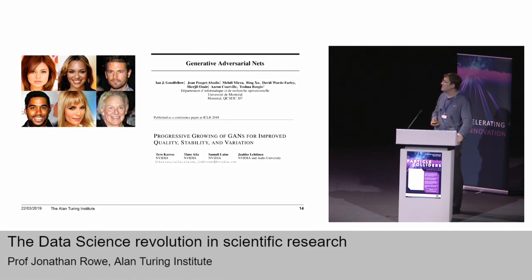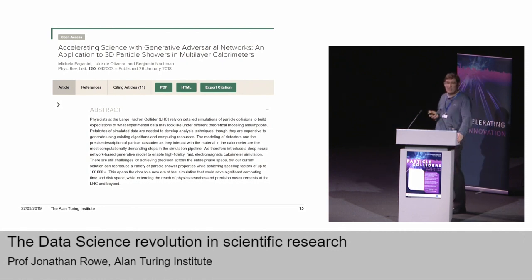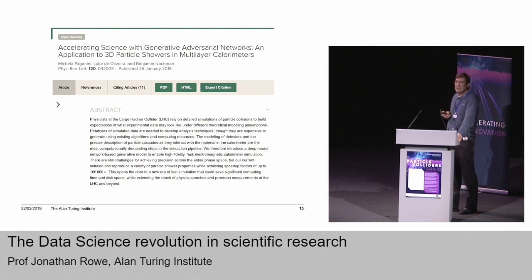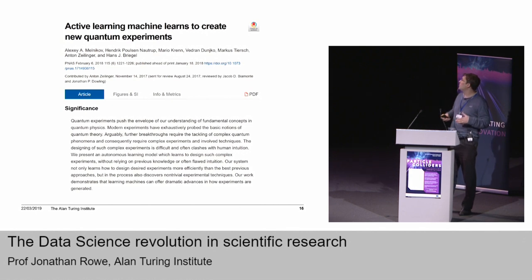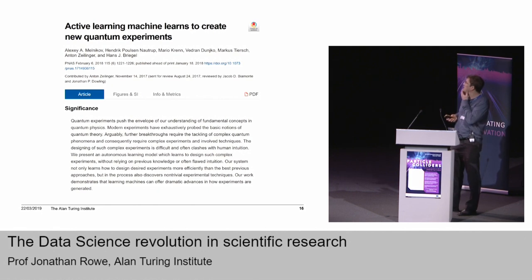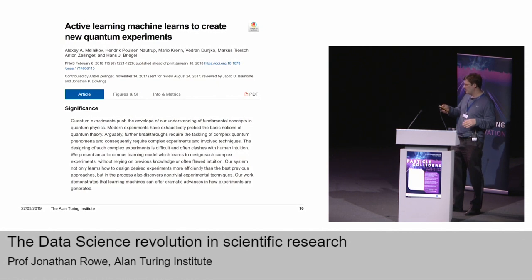Very soon scientists got hold of this idea. Here's a recent paper from last year — an application to particle physics at the Large Hadron Collider to improve the classification of 3D particle showers. This general idea of co-evolving your AI technology with the problem is also being used in how to design new experiments. We want experiments that are going to discover new physics, and if you can co-evolve the experimental design with what you already know or suspect, then that's very powerful.